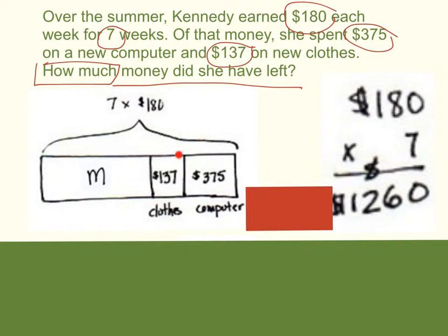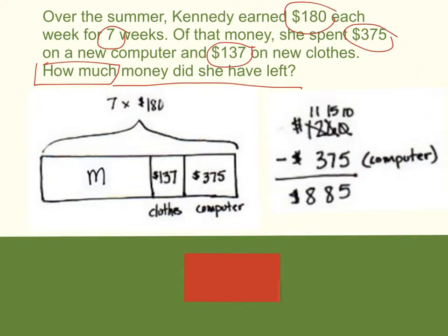Now we have to subtract these two numbers in order to find how much money she has left. We take our total, $1,260, and we subtract $375. Our final difference would be $885.